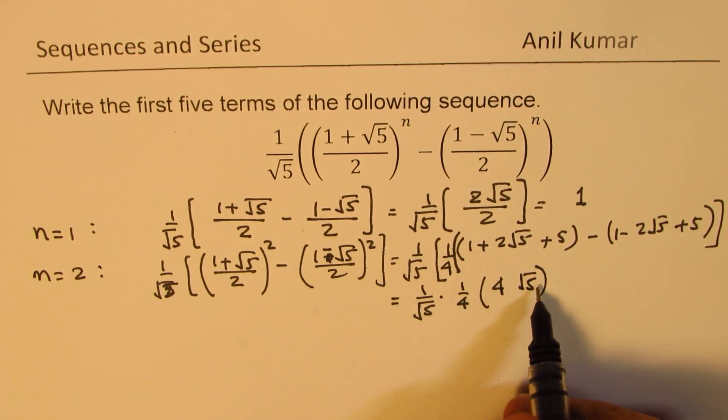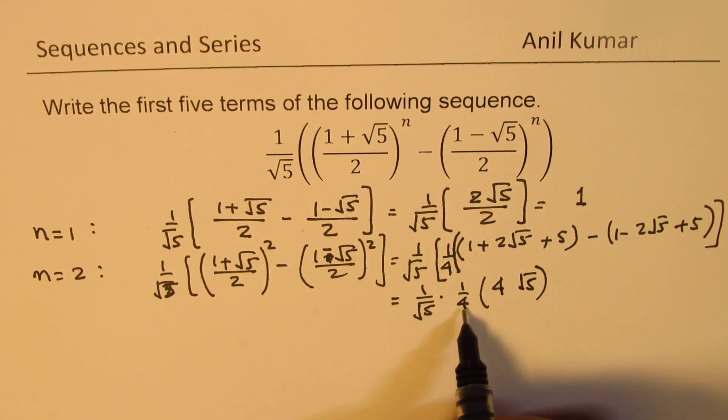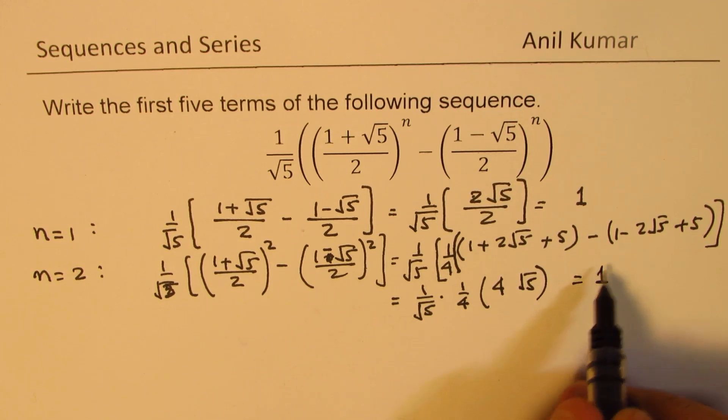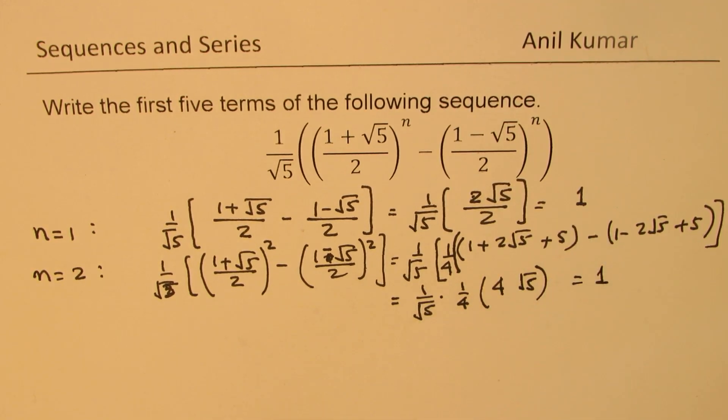4 times square root 5 divided by 4 times square root 5 is indeed 1, so again we get 1 as our answer for n equals 2.